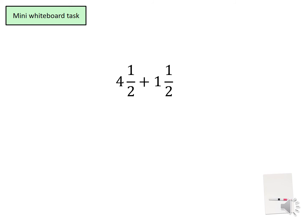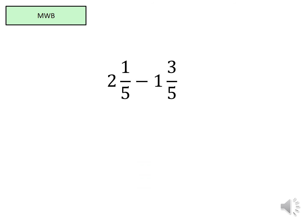Welcome back. The answer is six. Can you please have a go at this question? When you're done, come back and I'll go through it myself. Welcome back. Five times two is ten, add the one becomes eleven. So we have eleven fifths, minus one times five is five, add the three becomes eight. Minus eight fifths. So we now have three fifths.